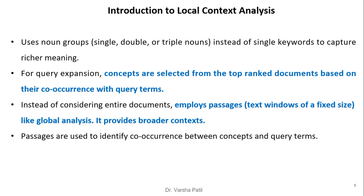Introducing local context analysis: it uses noun groups — single, double, or triple nouns — instead of single keywords to capture richer meaning from documents. For query expansion, concepts are selected from the top-ranked documents based on their co-occurrence with the query terms. Instead of examining the entire document, it employs passages, that is a text window of fixed size, similar to global analysis. Passages provide a broader context, and co-occurrence between concepts and query terms is extracted from these passages rather than entire documents.